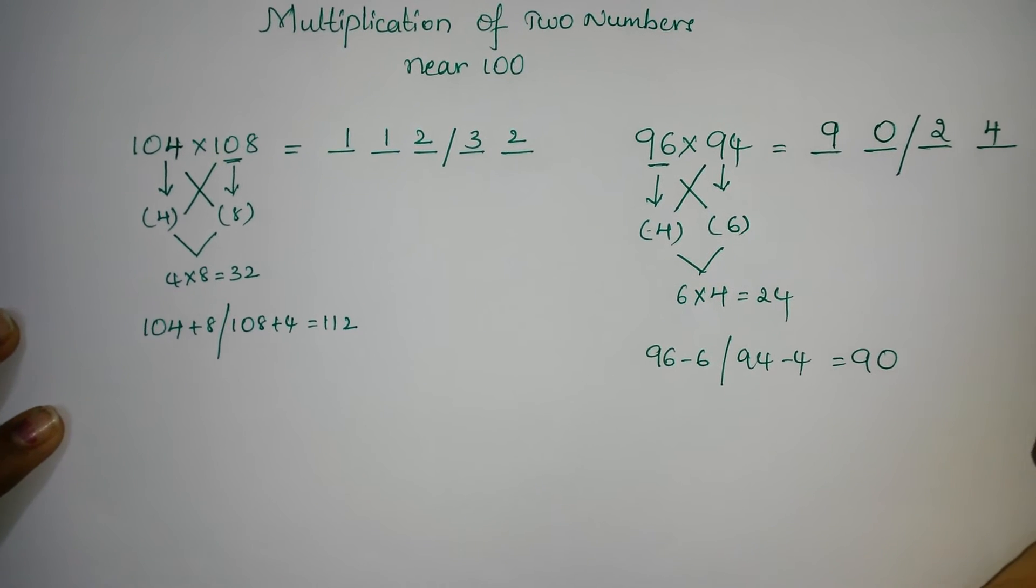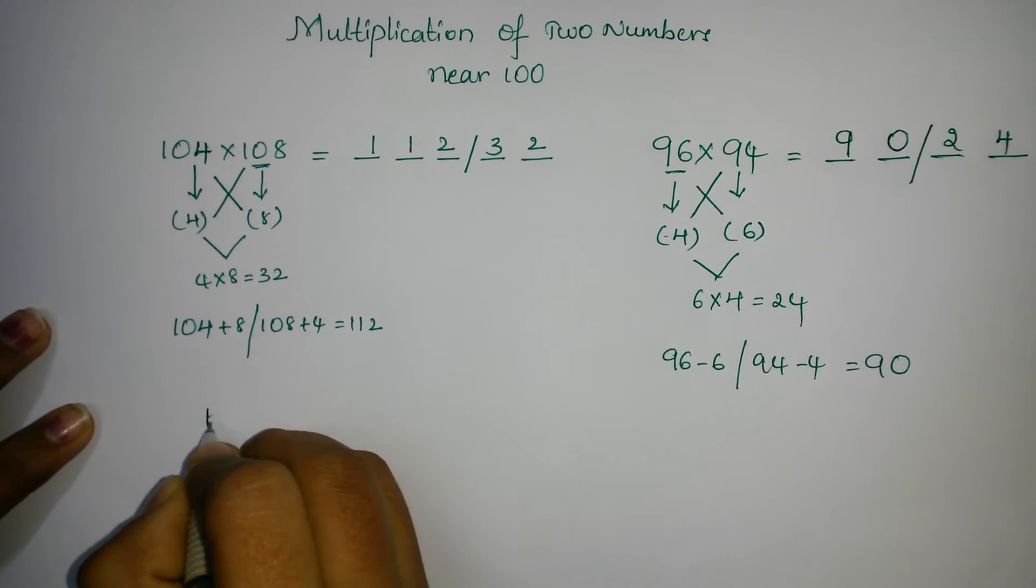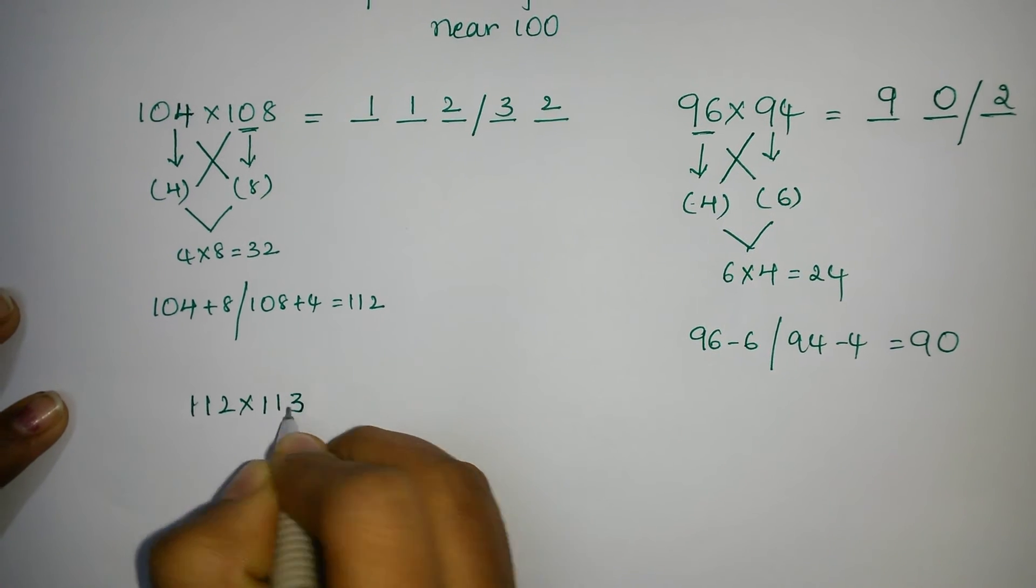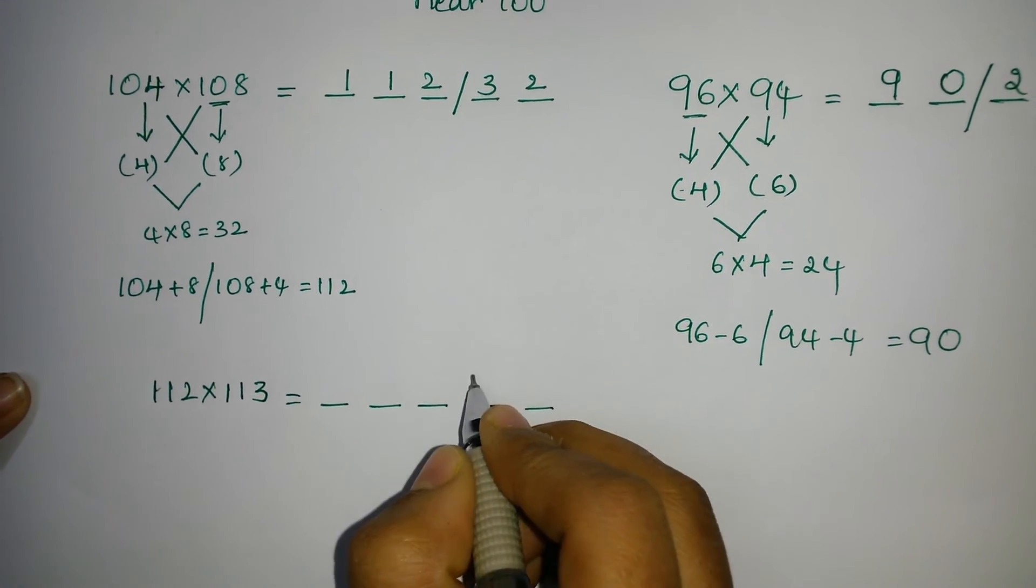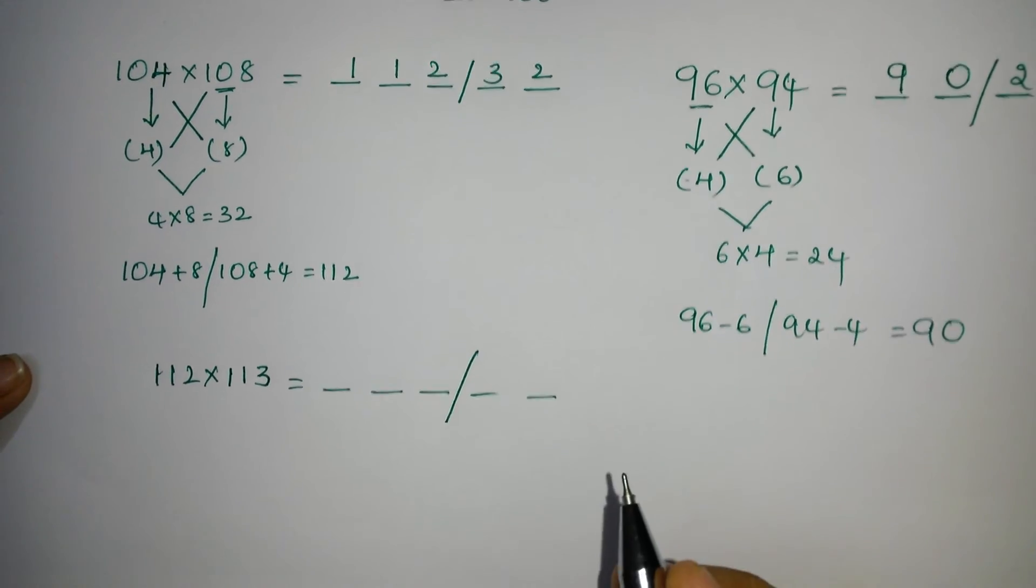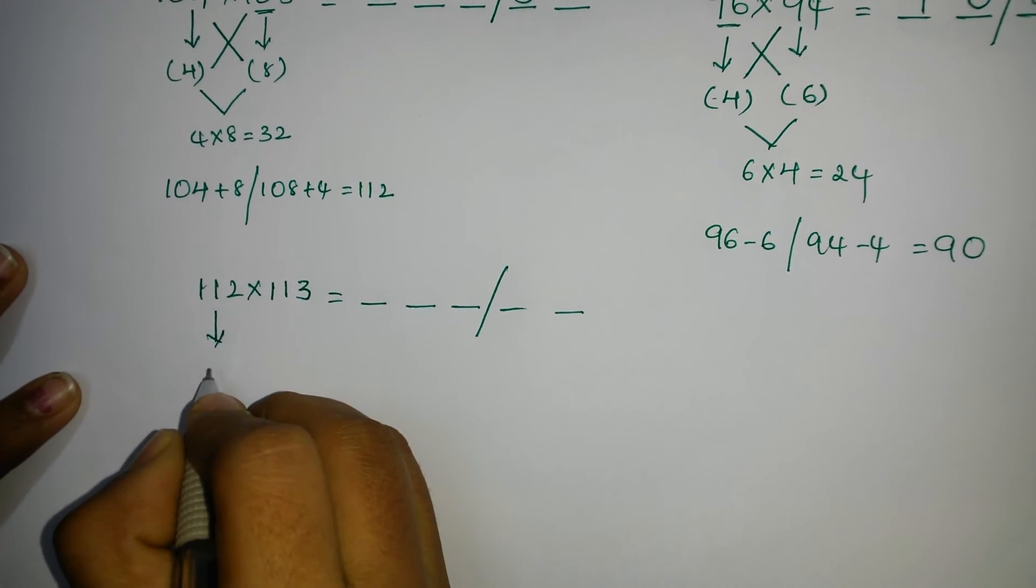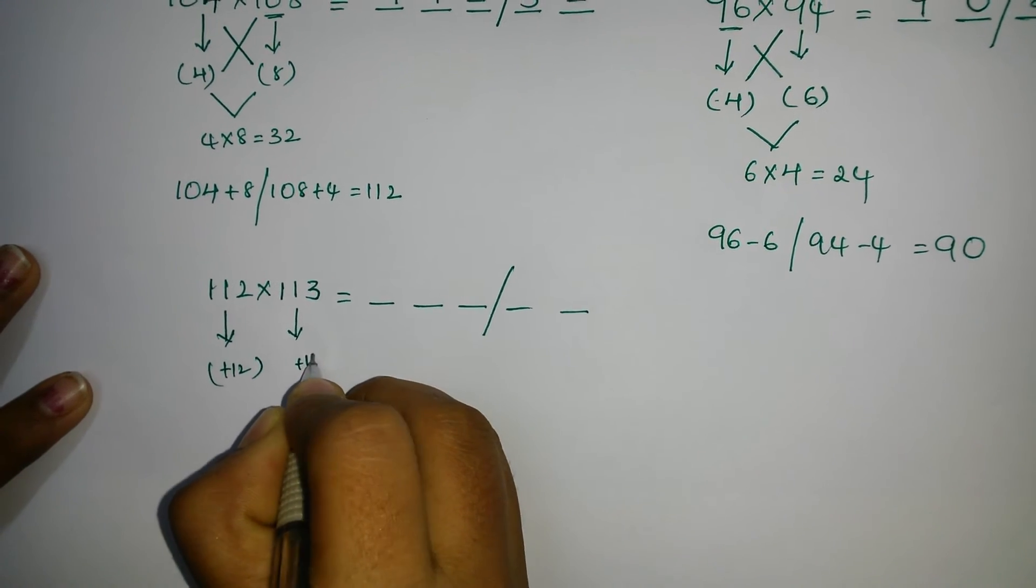Then next, I have one more example for you. That is 112 into 113. You will have the answer in 5 digits. That means you have to separate 2 and 3. So here we have 112. That means extra 12. Here extra 13.